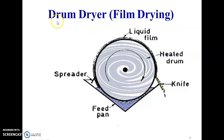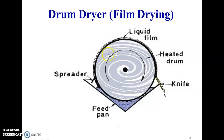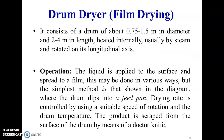The next one is the drum dryer, which is also known as a film dryer. It contains a heated drum by means of steam, and there is a pan provided in which the slurry is kept. This drum is slowly revolving, and while revolving, the drum picks up the slurry — that means some solid — from this pan. By means of a spreader, the thickness is maintained over this drum. While revolving, the moisture gets evaporated, and we get a dried product. This dried product is removed by means of a knife. So this is the drum dryer.